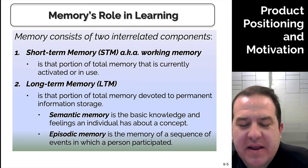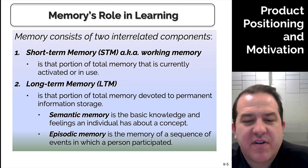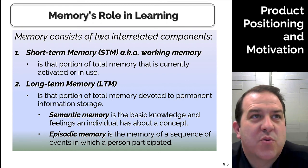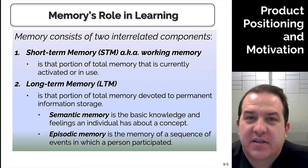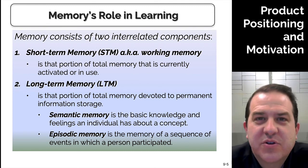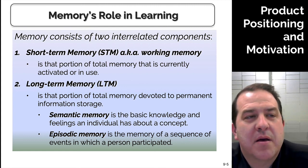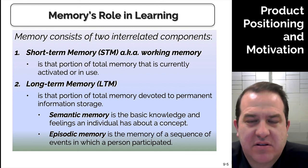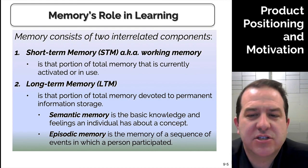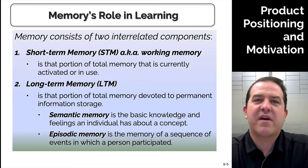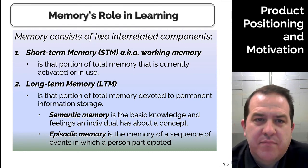We have two different types of long-term memory. Semantic memory is the basic knowledge and feelings an individual has about a concept. Episodic memory is the memory of a sequence of events in which you participated. You can remember feelings, what was going on — like a great experience. Whereas semantic memory is about a concept — if I ask you what you think of Hillary Clinton or Donald Trump, you automatically pull knowledge and feelings from your brain. So yes, memory is important.